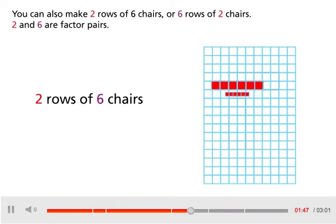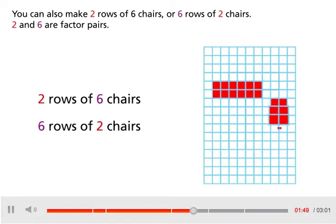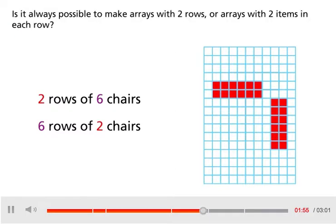You can also make 2 rows of 6 chairs or 6 rows of 2 chairs. 2 and 6 are factor pairs. Is it always possible to make arrays with 2 rows or arrays with 2 items in each row?